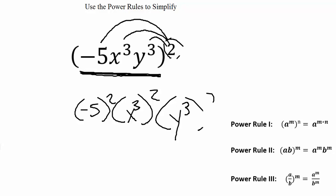Now we have cases of power rule 1 because we have an exponent being raised to another exponent. Let's further simplify.